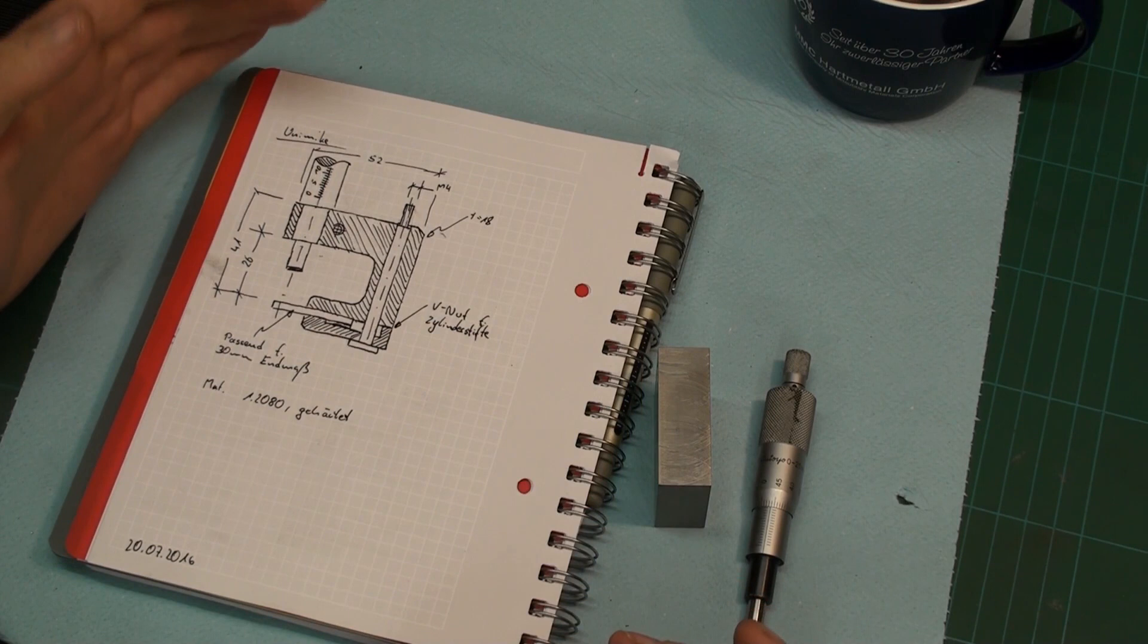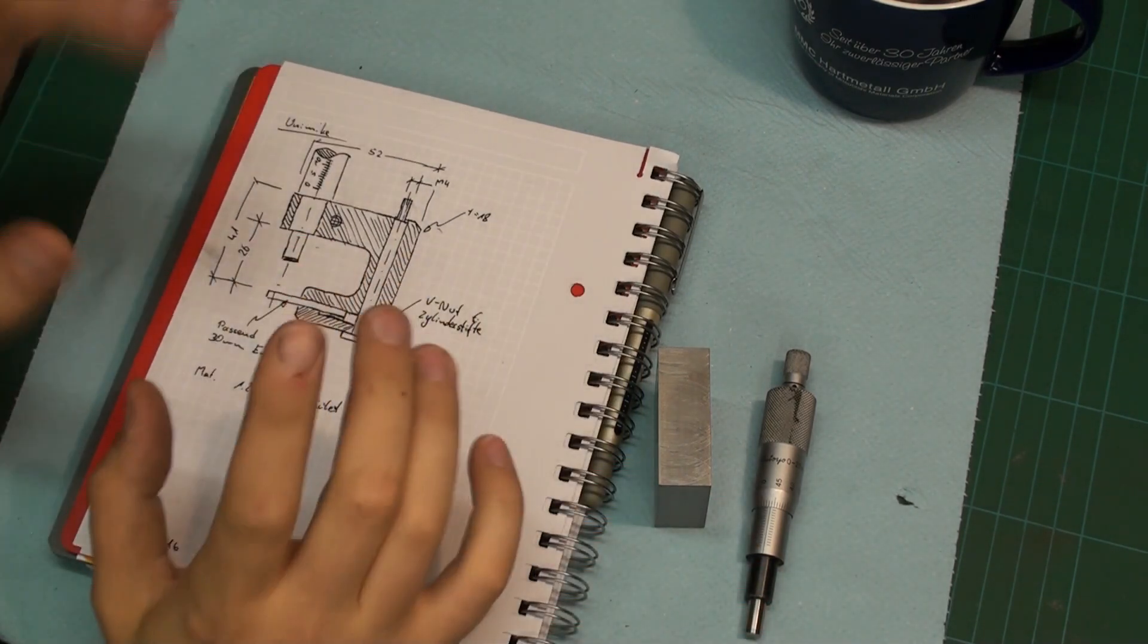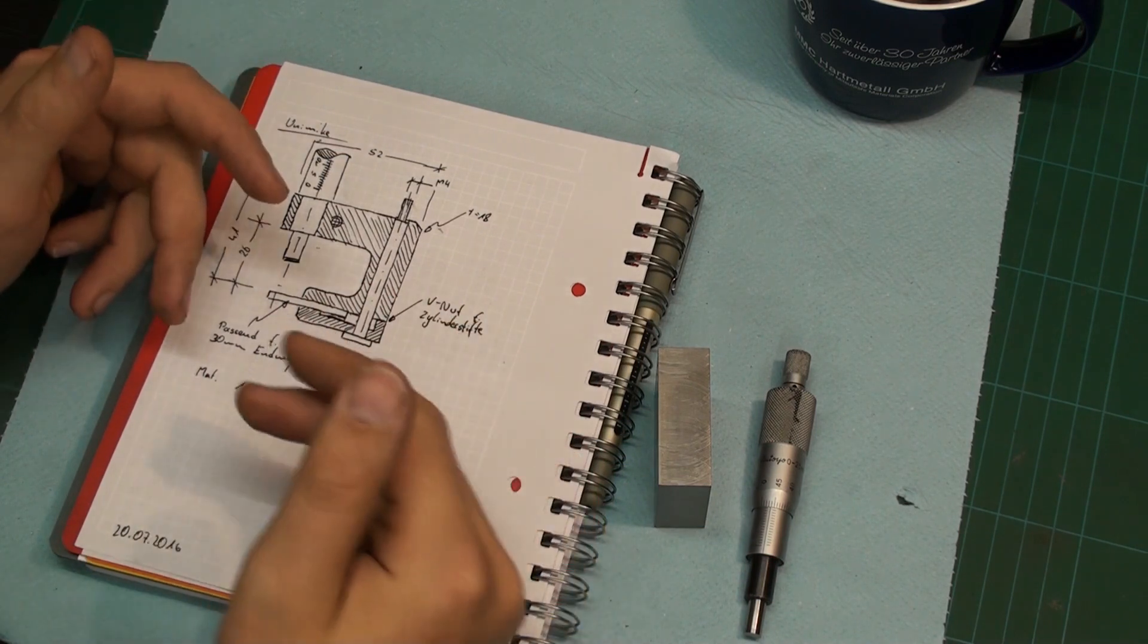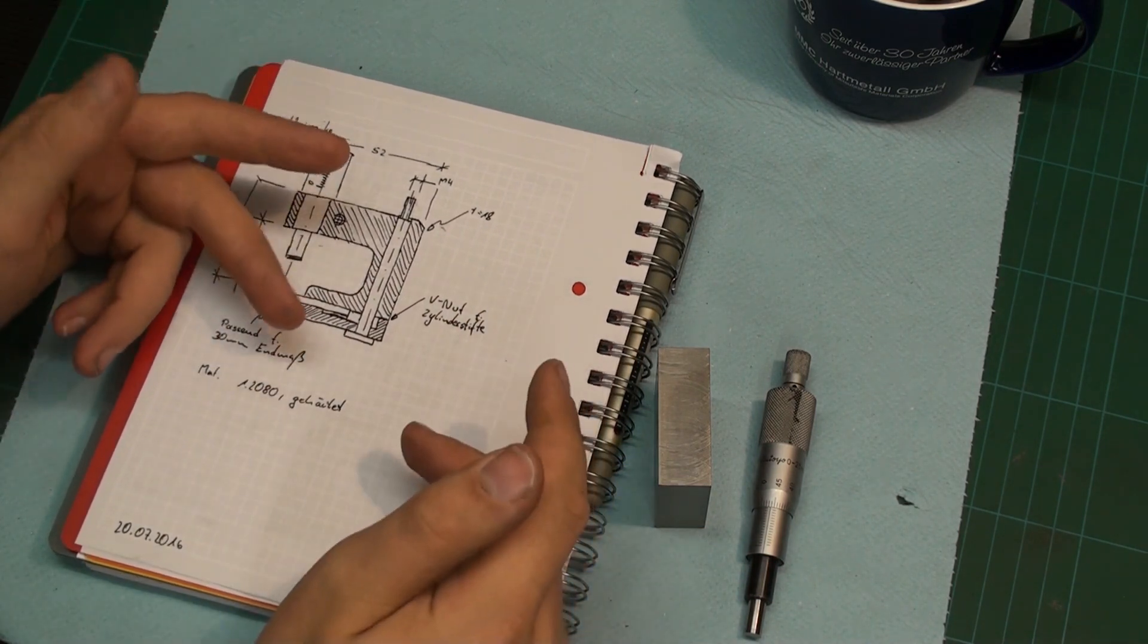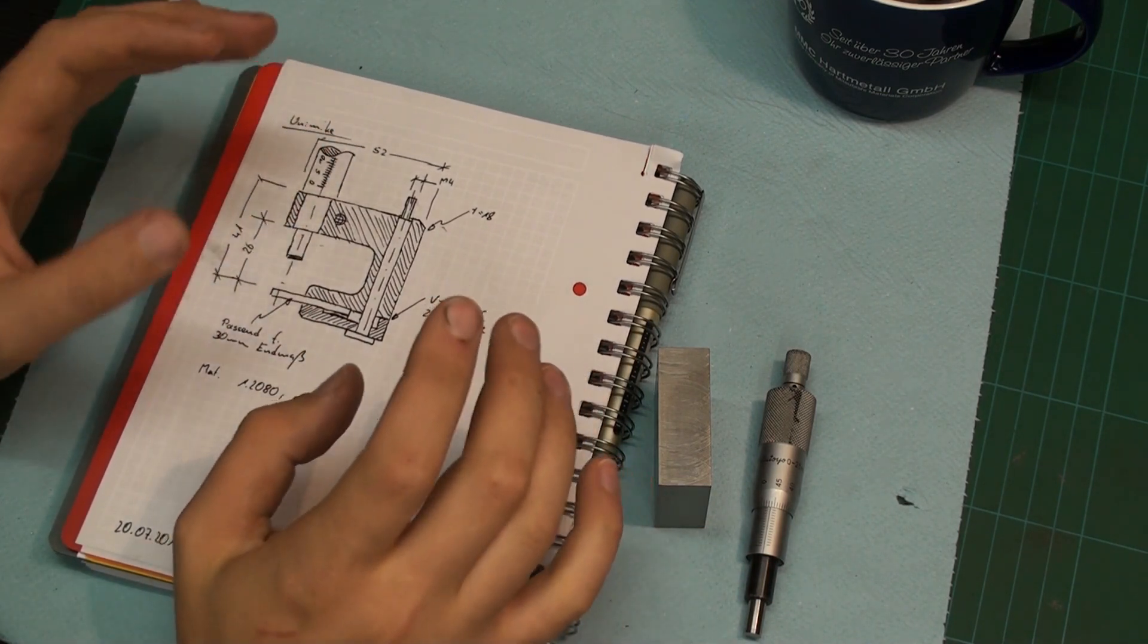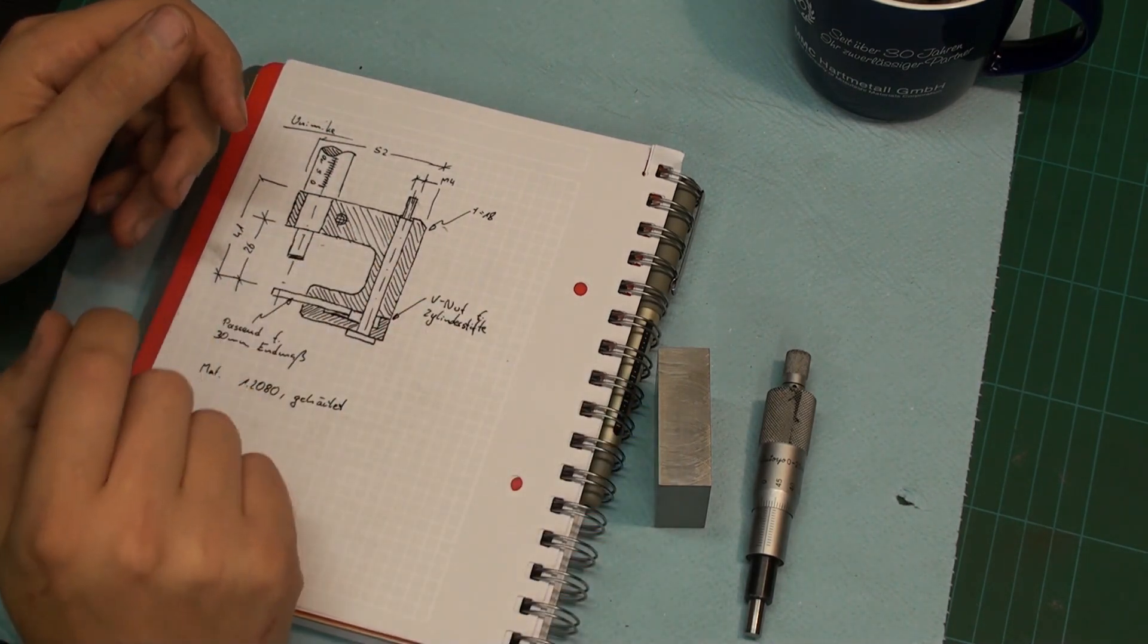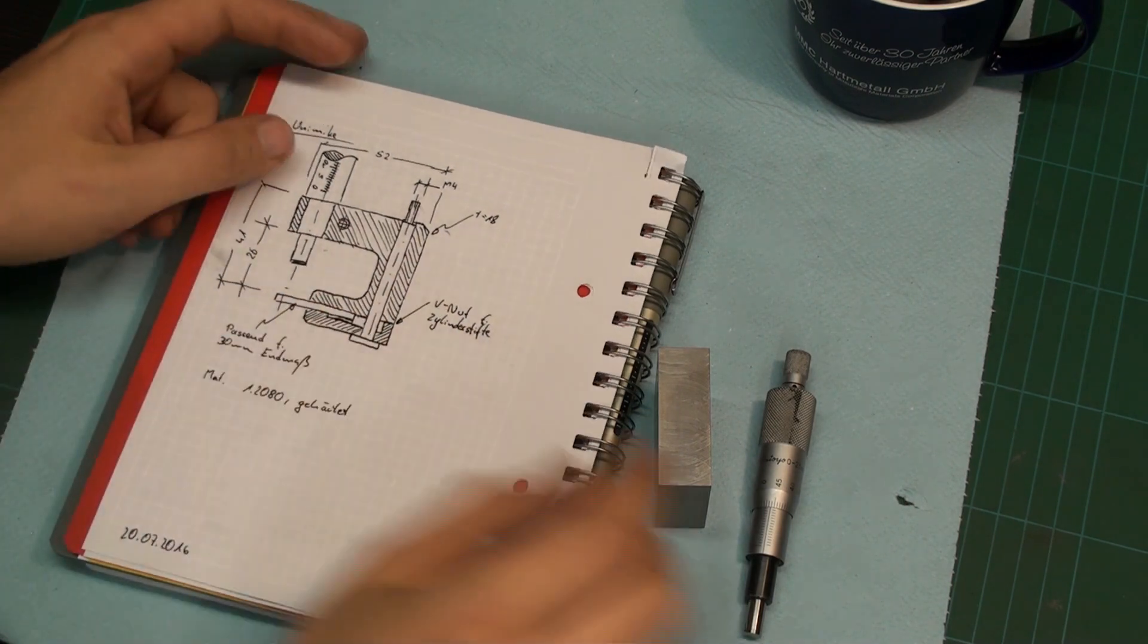Hey, welcome back to the shop. Today I wanted to start a small tool making project. For the longest time I wanted a Mitutoyo Huyo Unimike, but they were quite rare in Germany. It seems that nobody really has them or uses them, so I decided to build my own.